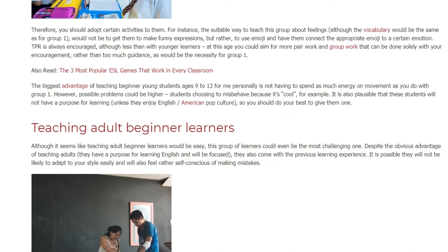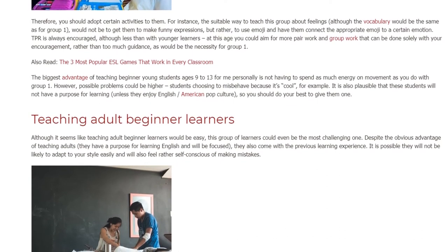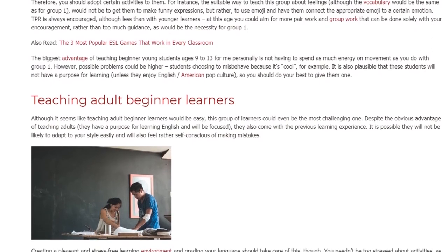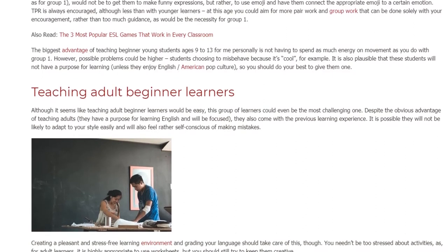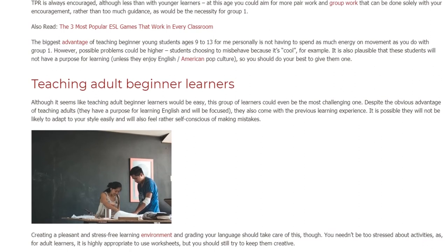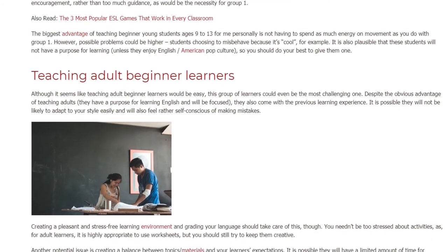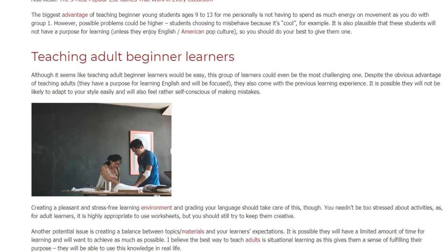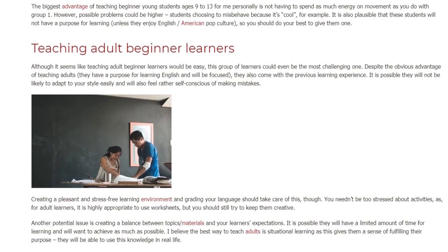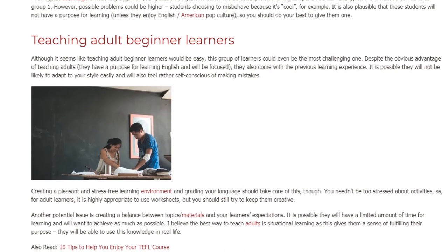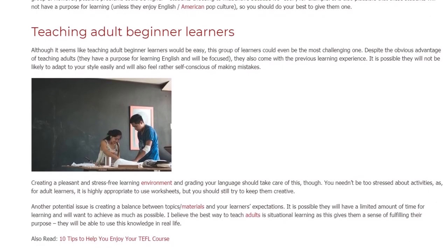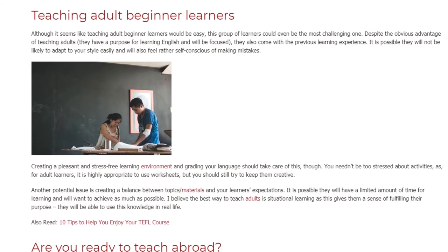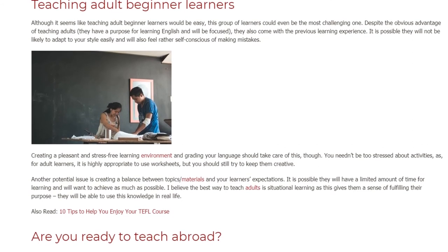Teaching Adult Beginner Learners. Although it seems like teaching adult beginner learners would be easy, this group of learners could even be the most challenging one. Despite the obvious advantage of teaching adults — they have a purpose for learning English and will be focused — they also come with a previous learning experience. It is possible they will not be likely to adapt to your style easily and will also feel rather self-conscious of making mistakes. Creating a pleasant and stress-free learning environment and grading your language should take care of this. You needn't be too stressed about activities, as for adult learners it is highly appropriate to use worksheets, but you should still try to keep them creative.